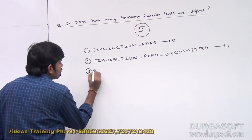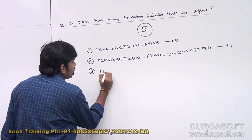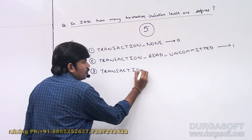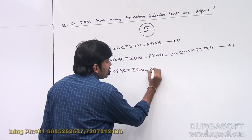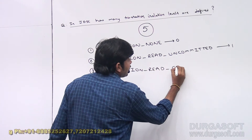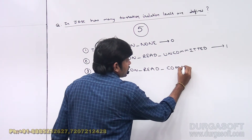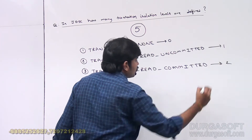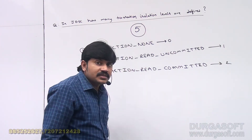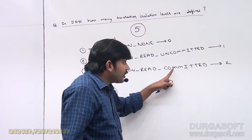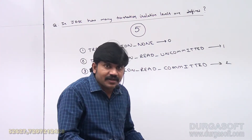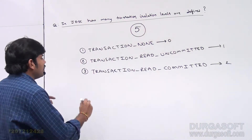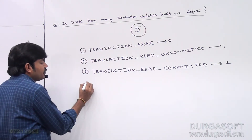The third one is TRANSACTION_READ_COMMITTED — its value is 2. With this level, you can read only committed data. The dirty read problem by default will be solved. Remember that the dirty read problem by default will be solved with TRANSACTION_READ_COMMITTED.